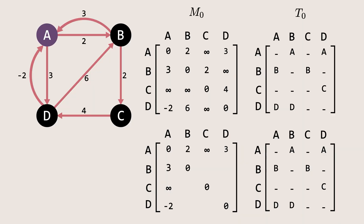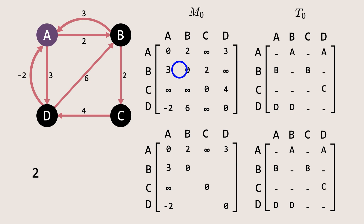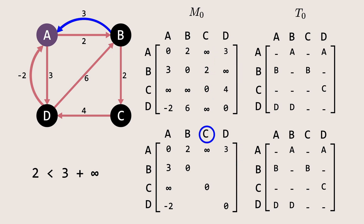Now let's see how the update works. First, let's check the path from B to C. The current cost for this path is 2. We'll check if a shorter path exists via node A. Going from B to A, there is an edge with a weight of 3. Next, we check the cost of going from A to C, which is infinity, meaning there is no path from A to C. Since there's no shorter path through node A, the previous edge with a weight of 2 remains the shortest path.